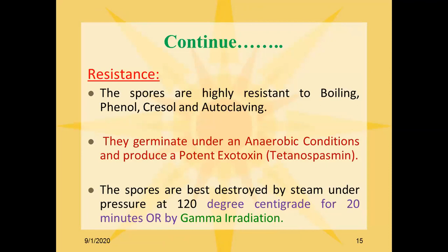The spores are highly resistant to boiling, phenol, cresol, and autoclaving. They germinate under anaerobic conditions and produce a potent exotoxin known as tetanospasmin. This bacteria germinates and grows in anaerobic conditions, meaning without oxygen. The spores are best destroyed by steam under pressure at 120 degrees centigrade for 20 minutes, or by gamma radiation.